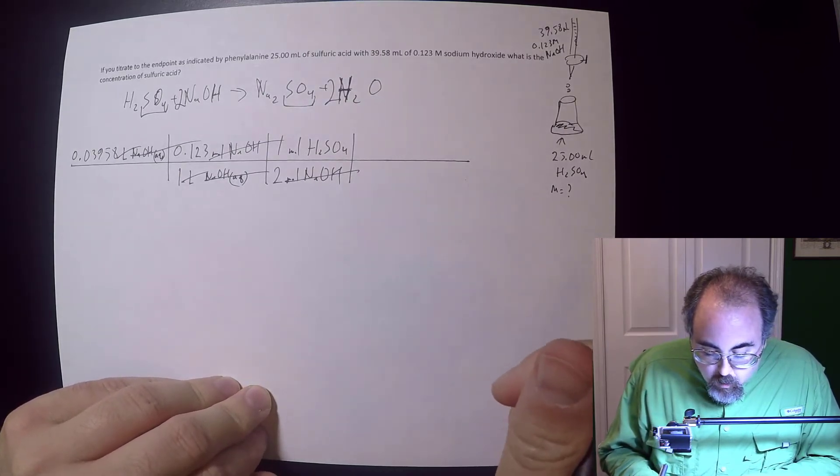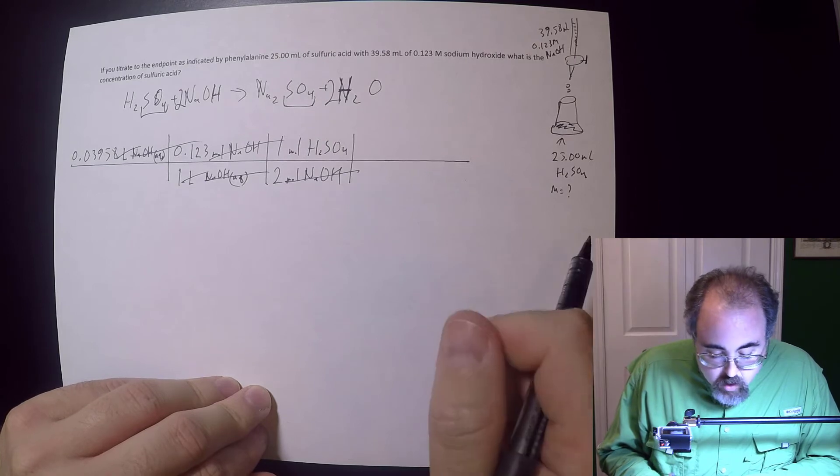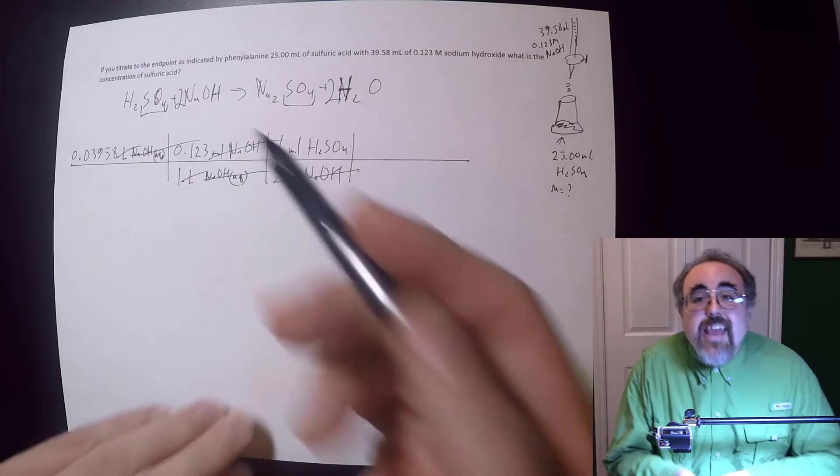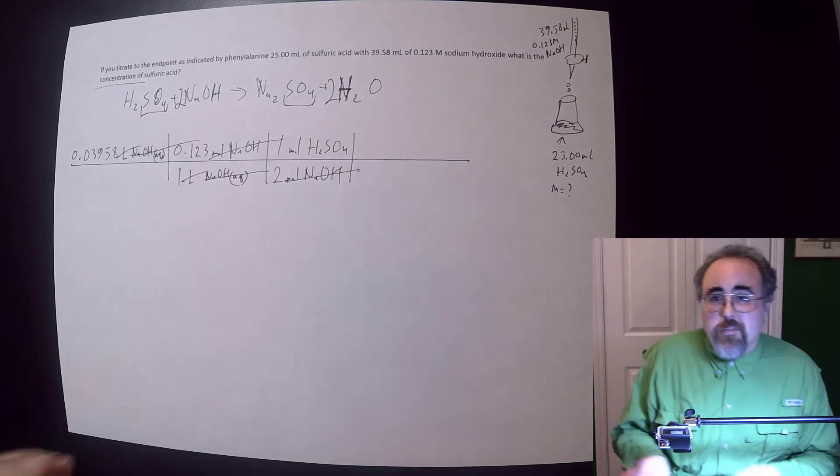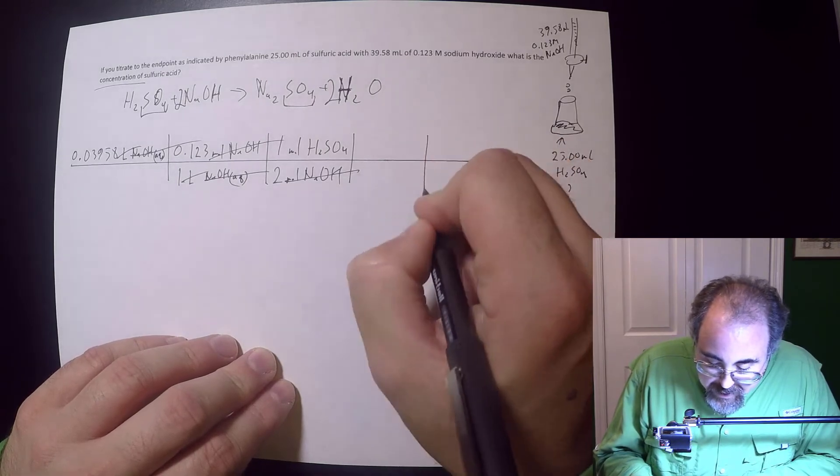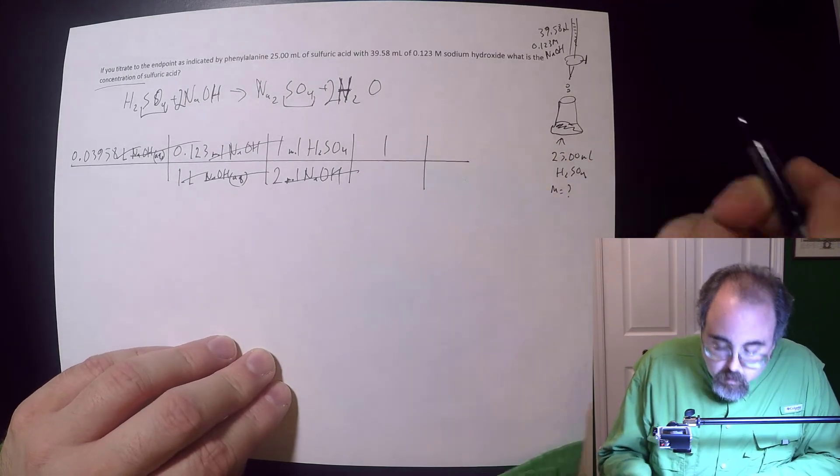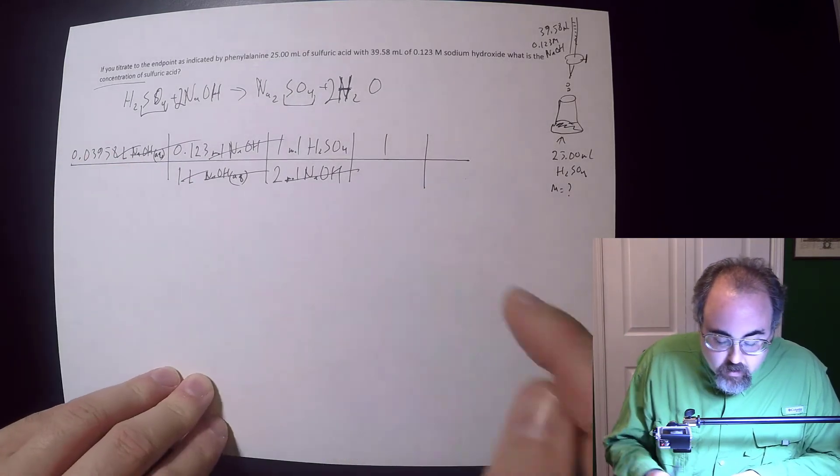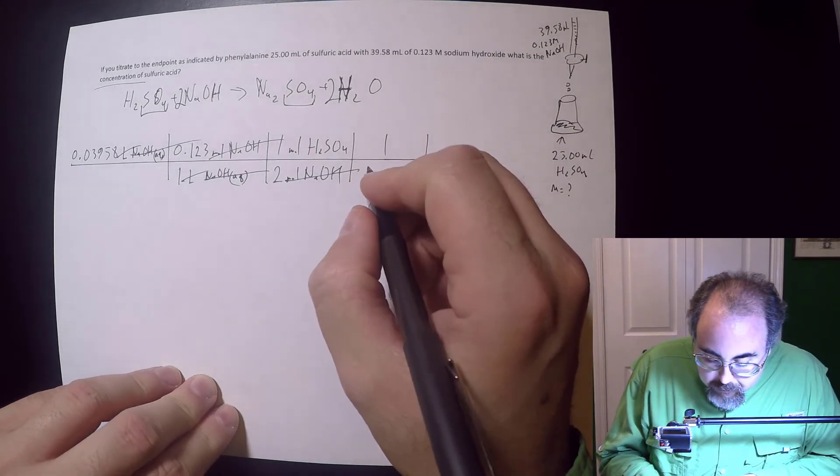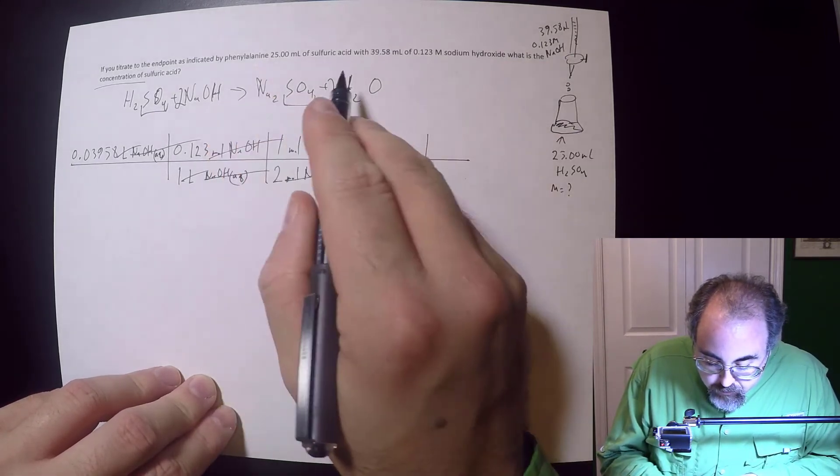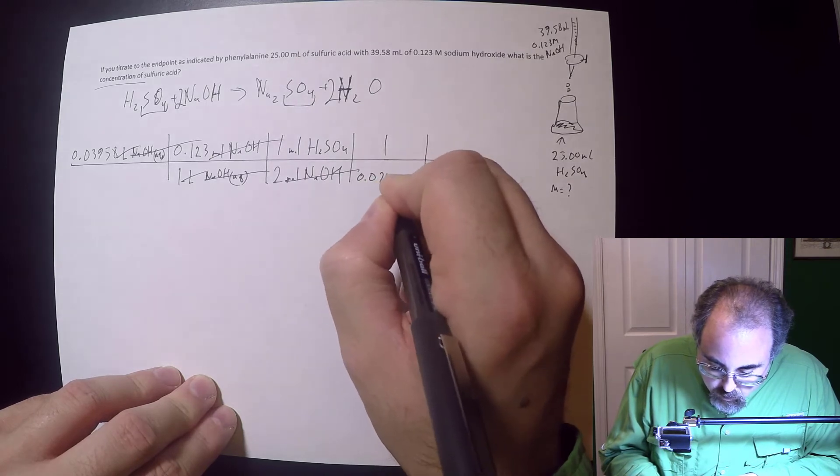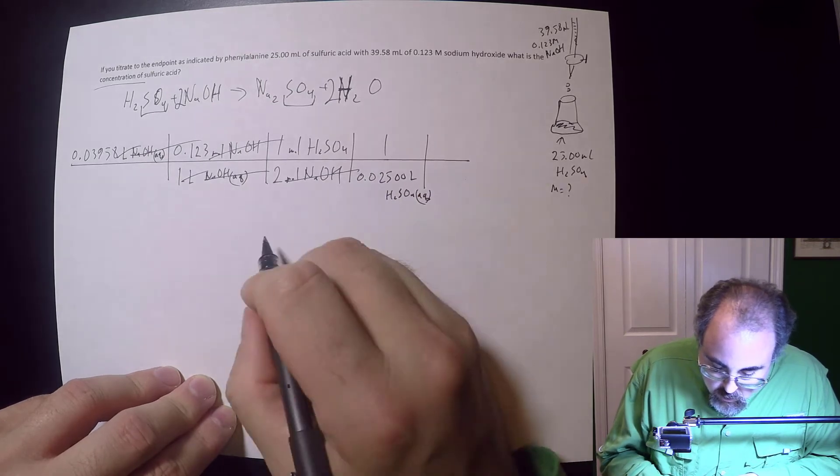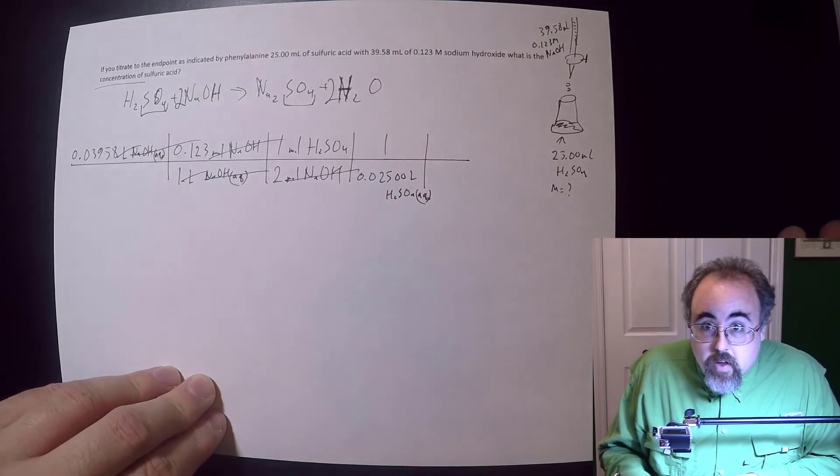Next up, I'm going to look at my ratio because I've got sodium hydroxide and sulfuric acid. What you want by what you got. So that's two moles NaOH for every one mole H2SO4. Now moles NaOH have canceled. Liters of NaOH aqueous have canceled. Next up, what I want is moles per liter. I'm going to draw a box and in this case, I know that this is 0.02500 liters of H2SO4 aqueous.